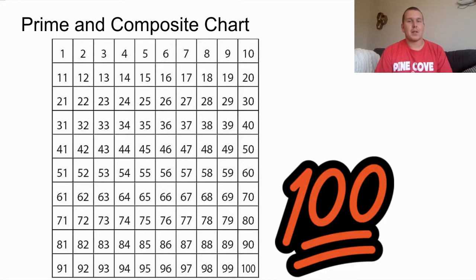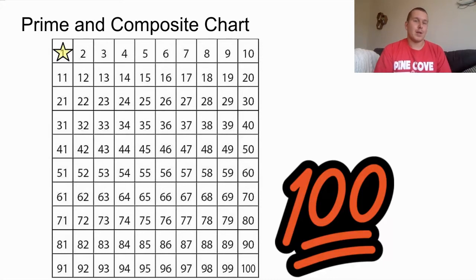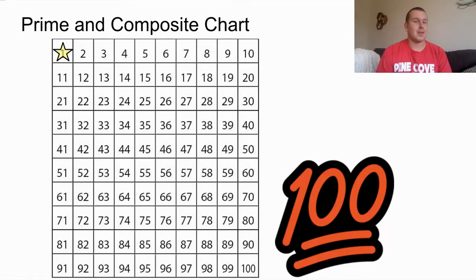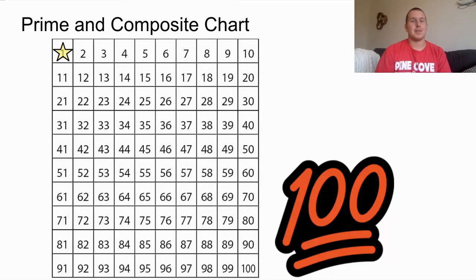Now we're going to take a look at the first number, and that is the number one. The number one is a special number because it is neither prime nor composite. It is its own number — it's only divisible by one number, and that's itself.